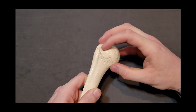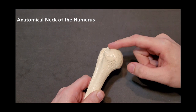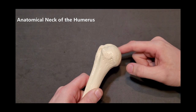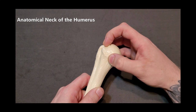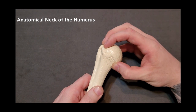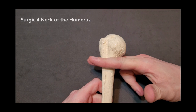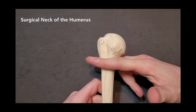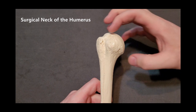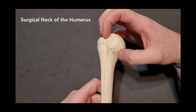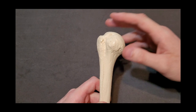Just after the articular surface there's a thin narrowing called the anatomical neck. Beyond all the main bony landmarks, approximately where the fingers rest, is the surgical neck. So we have the head, the anatomical neck, and the surgical neck.